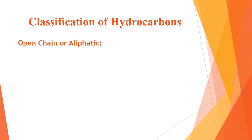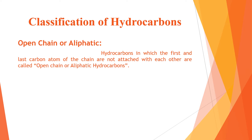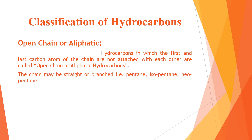Open chain, or aliphatic, hydrocarbons are those in which the first and the last carbon atom of the chain are not attached to each other. In these hydrocarbons the chain may be straight or branched. Examples include pentane, isopentane, and neopentane.